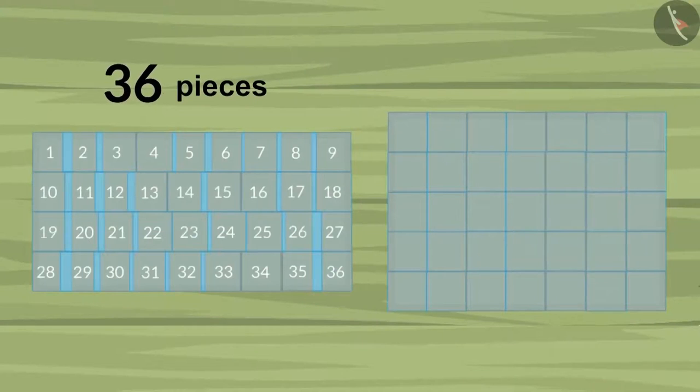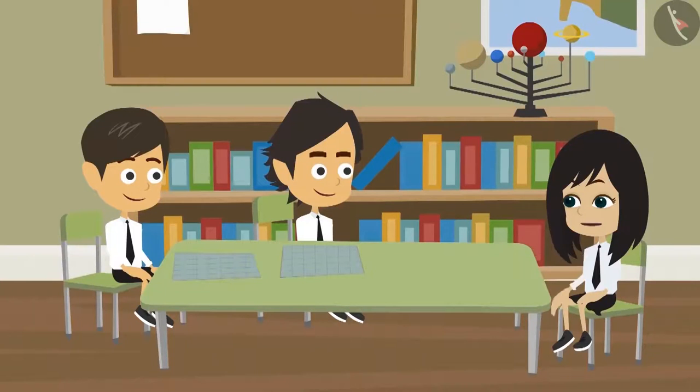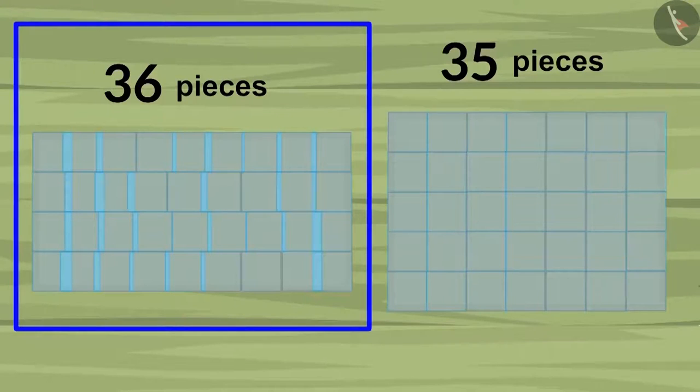Look, Neha, 36 pieces were required to cover my cardboard, whereas 35 pieces were required to cover Ayushman's cardboard. This means that my piece of cardboard is bigger. Hey, Rayyansh, Ayushman is right. You have incorrectly measured the cardboard.